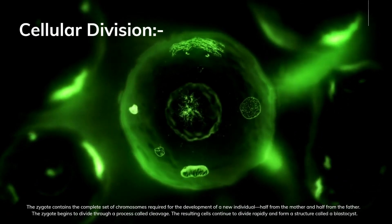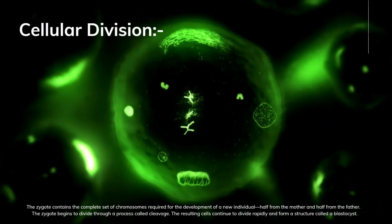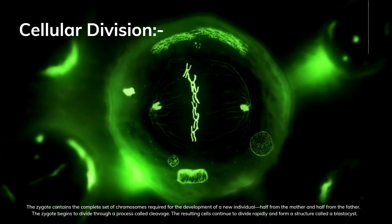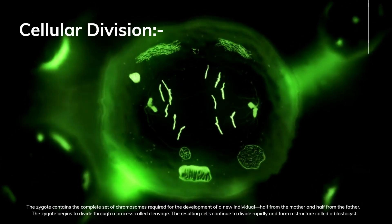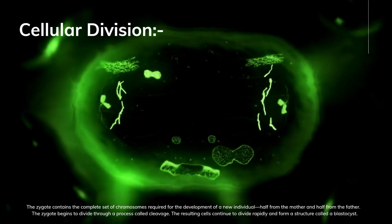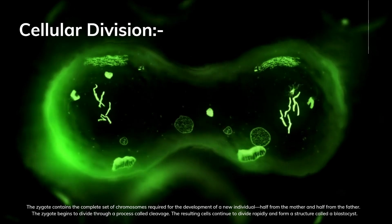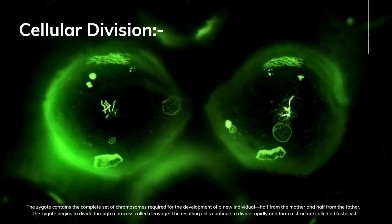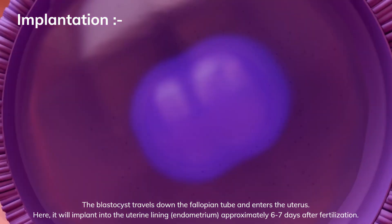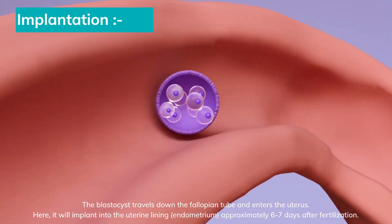The zygote contains the complete set of chromosomes required for the development of a new individual — half from the mother and half from the father. The zygote begins to divide through a process called cleavage. The resulting cells continue to divide rapidly and form a structure called a blastocyst.